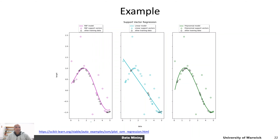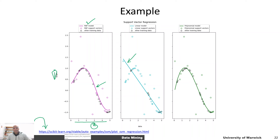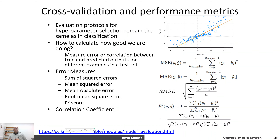Here is an example of support vector regression in practice. You've got a single independent variable x, a target value on the y-axis, and training examples shown in black. The true relationship is nonlinear. Using linear SVR gives a straight line, similar to ordinary least square regression. But with a polynomial kernel or an RBF kernel, you can discover the underlying nonlinear relationship. You are welcome to try out the code at the given link — it's pretty much the same way you would use a support vector machine.